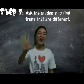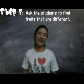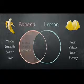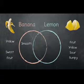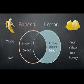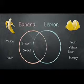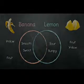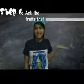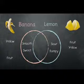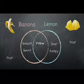Step 5: Ask the students to find things that are different — for example: smooth, sweet, sour, bumpy. Step 6: Ask the students to find things that are alike — for example: yellow, fruits.